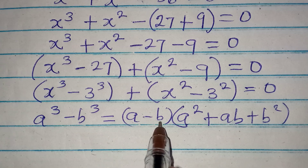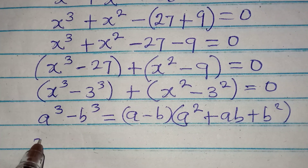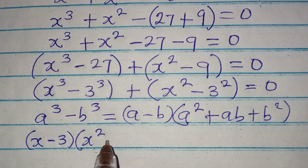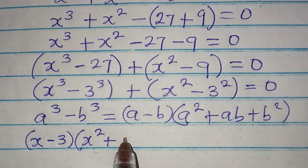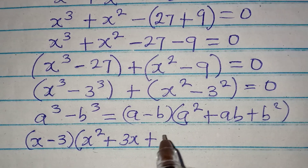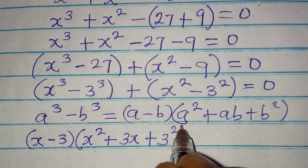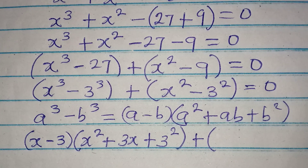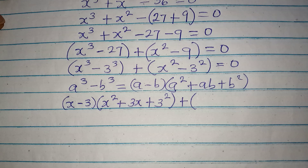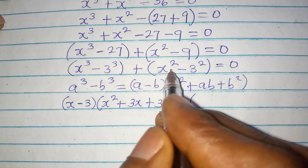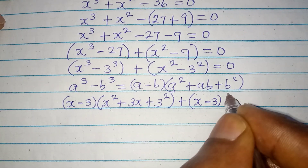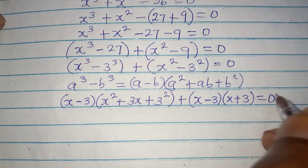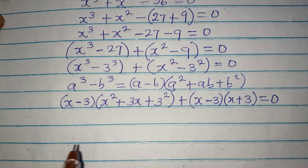Applying that formula to the first term, a minus b becomes x minus 3, then inside the bracket we have x squared plus 3x plus 3 squared, which is 9. Then for the second bracket we apply the difference of two squares, giving x minus 3 times x plus 3. Everything equals 0.